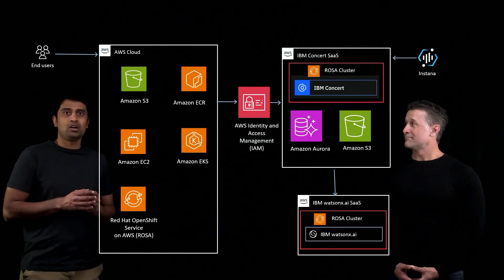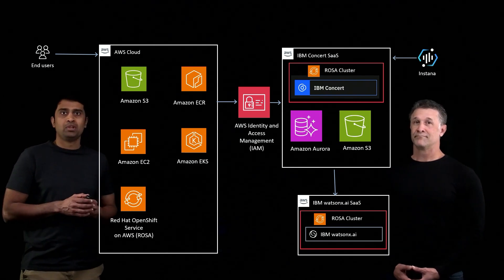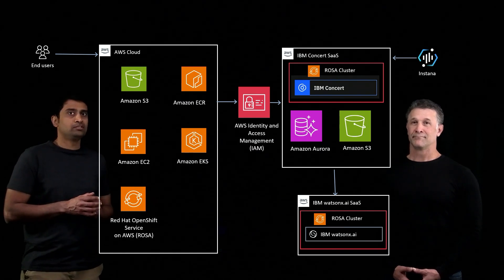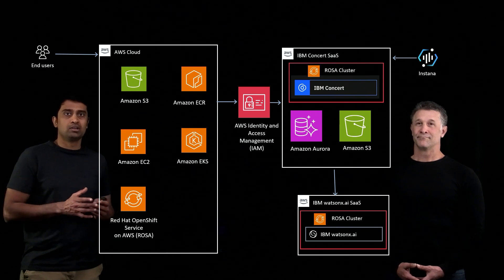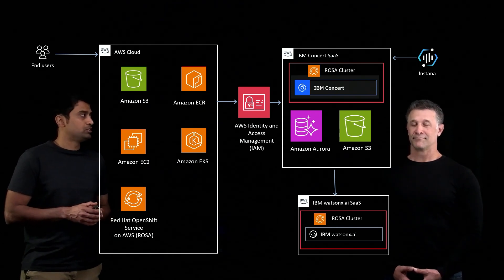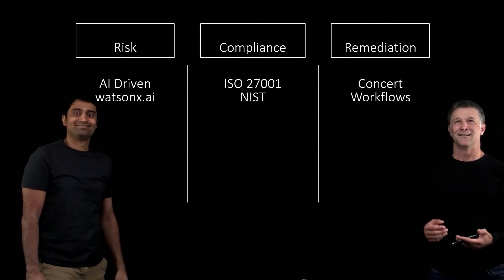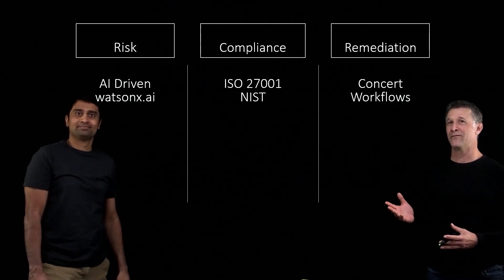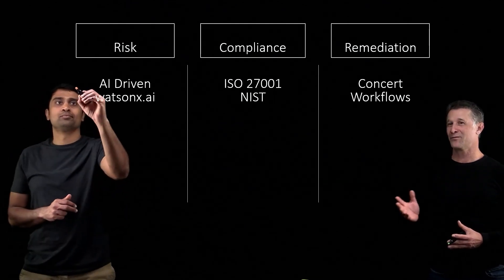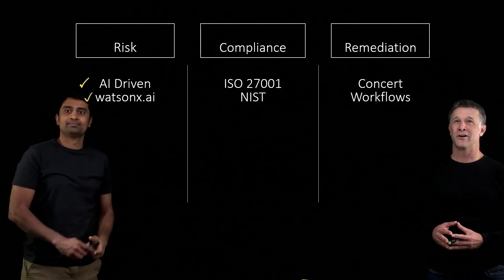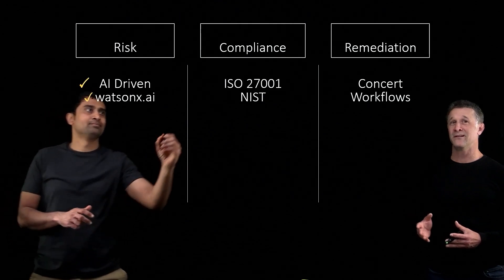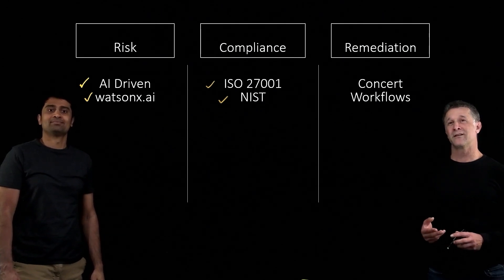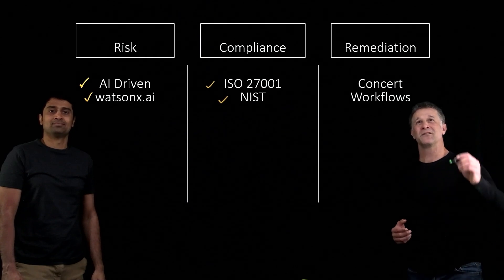So, that is great information. You talked about how Concert can help solve hybrid cloud challenges. I want to ask you about another important thing that customers should pay attention to, which is security and extending that to compliance as well. How does IBM Concert help customers with the security and compliance requirements that they may have? Thank you, that's a great question. Security and compliance are top priorities for enterprises running workloads on AWS. IBM Concert helps organizations identify vulnerabilities and security risks with AI-driven insights using WatsonX.ai. We help ensure compliance for your workloads with industry standards like ISO 27001 and NIST. Lastly, we automate remediation through integrations with AWS infrastructure, compute, and storage services, and enterprise ticketing systems using Concert workflows.